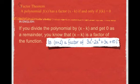The Factor Theorem tells us that a polynomial f of x has a factor of x minus k if and only if f of k equals 0. Here's what this tells us in English. If you divide the polynomial by that binomial and you get 0 as a remainder, you know that x minus k is a factor of the function.